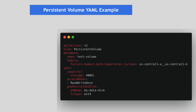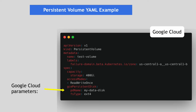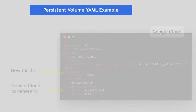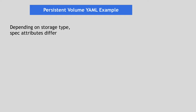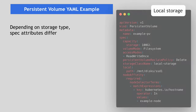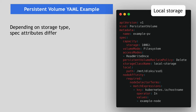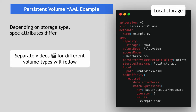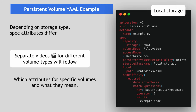This is another example using Google Cloud as a storage backend, with the storage backend specified and capacity and access modes defined. Depending on the storage type, some attributes in the specification will be different because they're specific to the storage type. This is another example of local storage on the node itself, which has an additional node affinity attribute. You don't have to remember all these attributes at once — I will make separate videos covering the most used volumes with examples and demos.